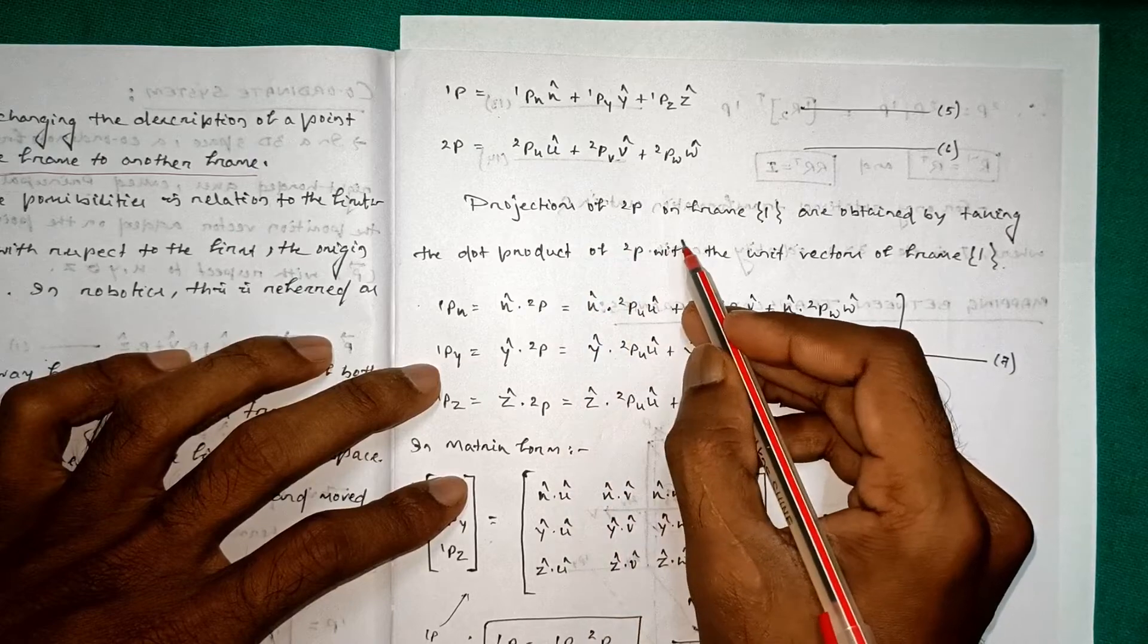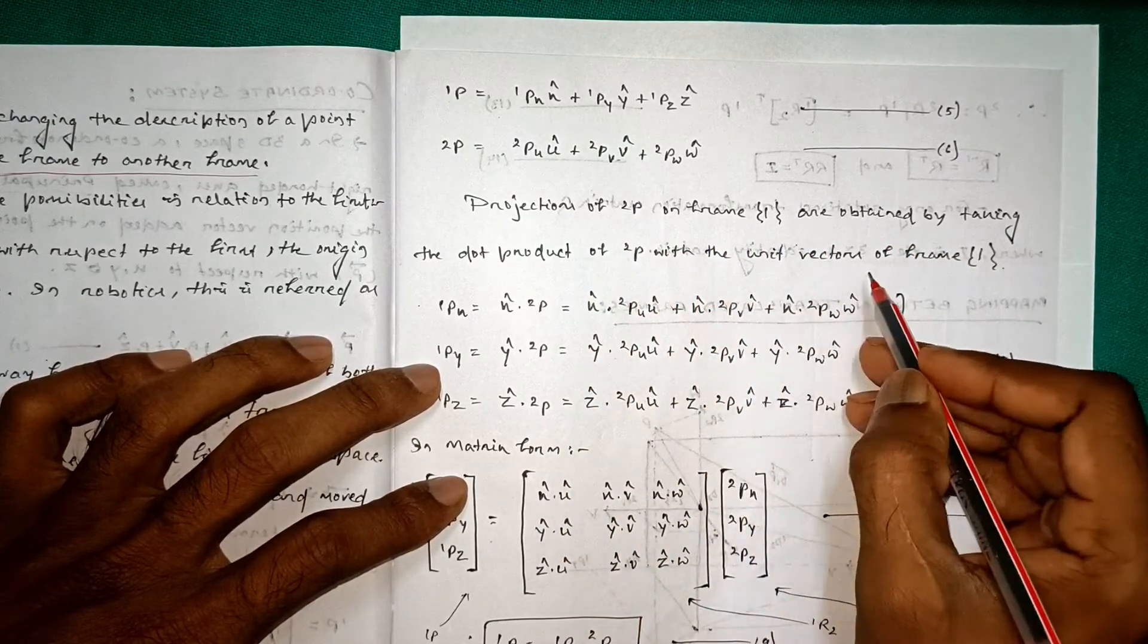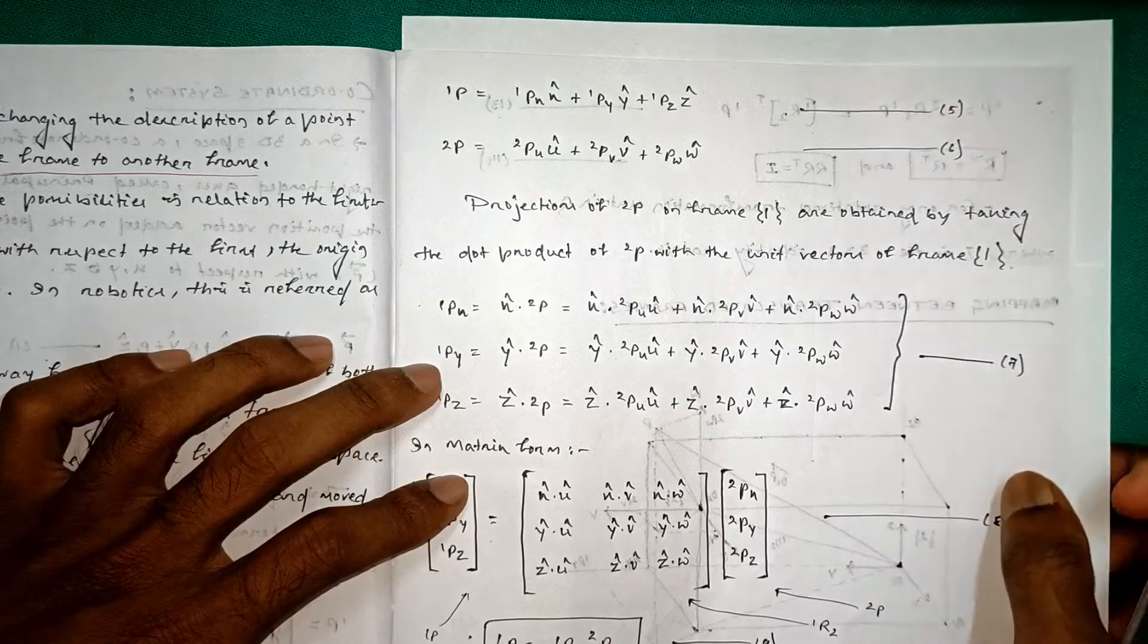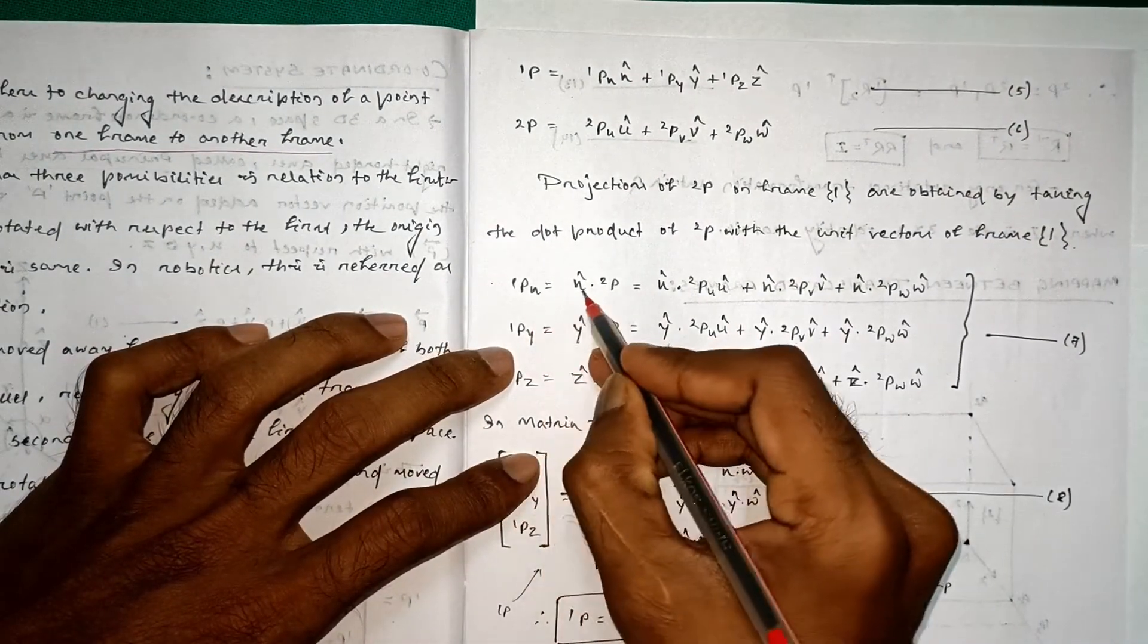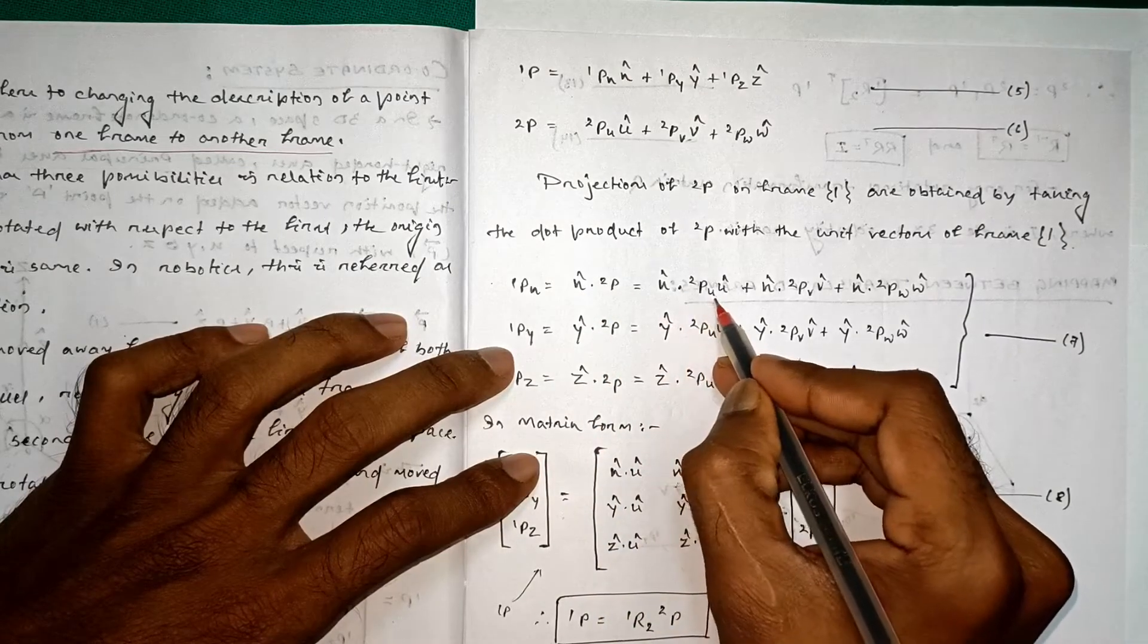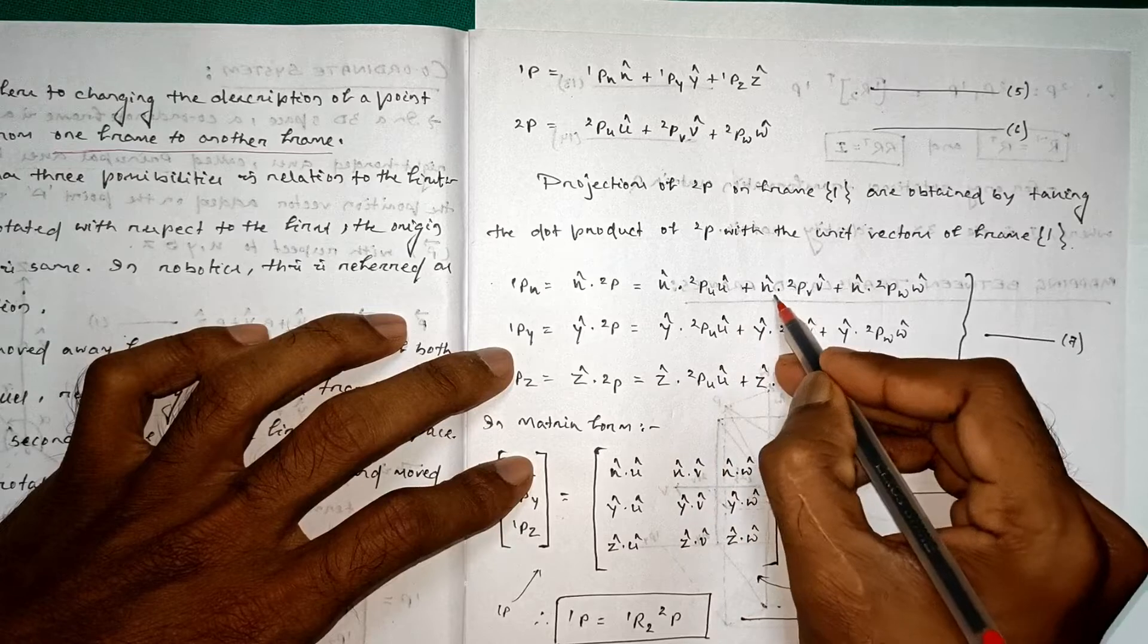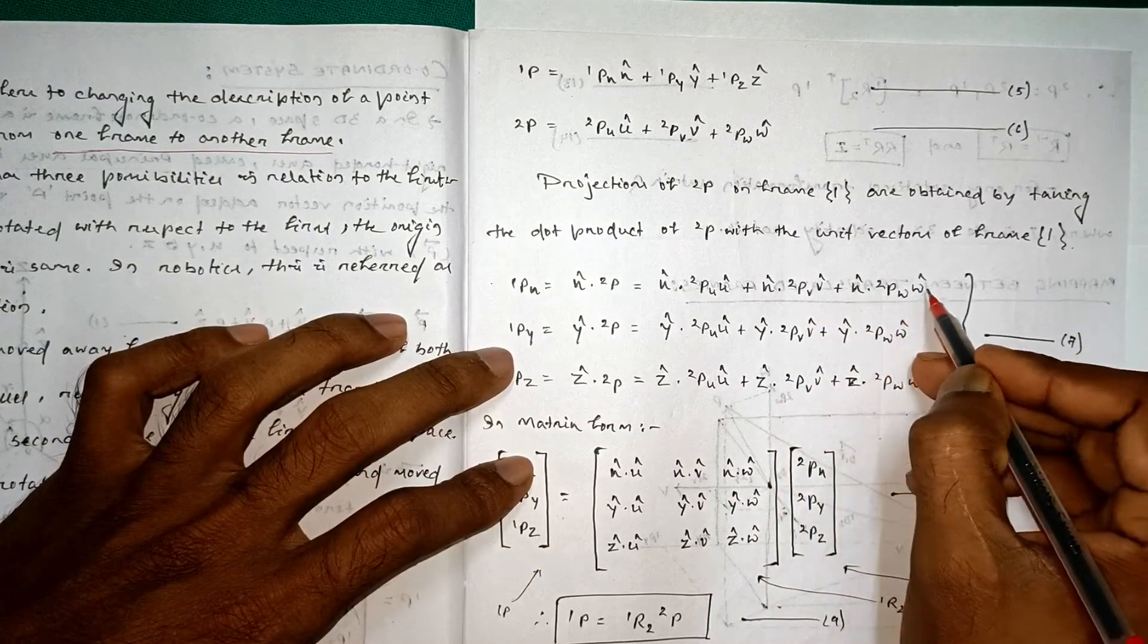So projections of 2P on frame 1 are obtained by taking the dot product of 2P with the unit vectors of frame 1. So by taking the dot product we will get 1PX is equal to x cap dot 2P, that is x cap dot 2PU u cap plus x cap dot 2PV v cap plus x cap dot 2PW w cap. Similarly we can get 1PY and 1PZ and these 3 equations are equation number 7.